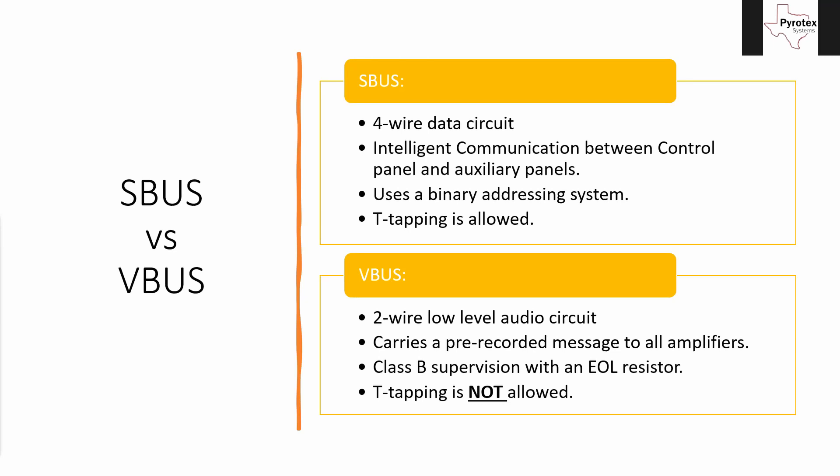SBUS and VBUS, even though they sound very similar except for that first letter, are entirely different things. SBUS is a four-wire data circuit. It does digital communication — intelligent control between the control panel and all of its auxiliary panels, whether they're enunciators, remote microphones, power supply panels, or amplifiers. It controls all the inputs, outputs, and displays. All the intelligent things that happen in a Silent Night or Fahrenheit panel are communicated over the SBUS, including extra SLC loop cards for loop two, loop three, and so on.